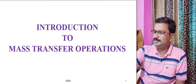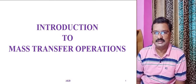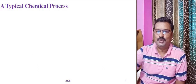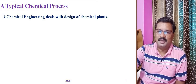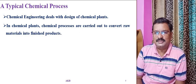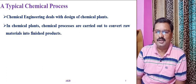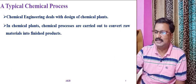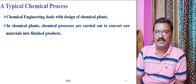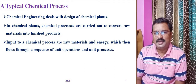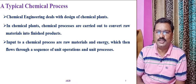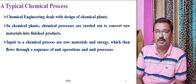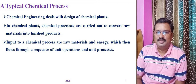We will begin with understanding a typical chemical process. Chemical engineering deals with design of chemical plants. In these chemical plants, chemical processes are carried out to convert raw materials into finished products. Inputs to a typical chemical process are raw materials and energy. These raw materials and energy will flow through a sequence of unit operations and unit processes before they are converted into the final product.